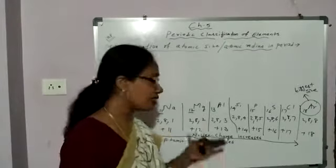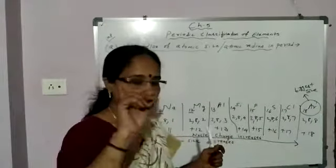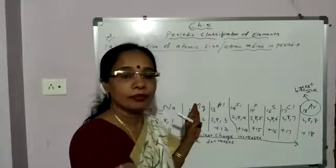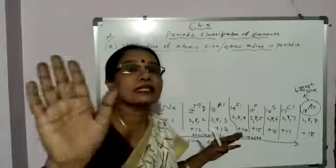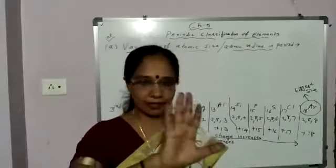And when we discuss about period, we say when we move from left to right. So keep one thing in mind, when you move from left to right in a period, atomic size decreases. Why? Because nuclear charge increases. This is the reason.